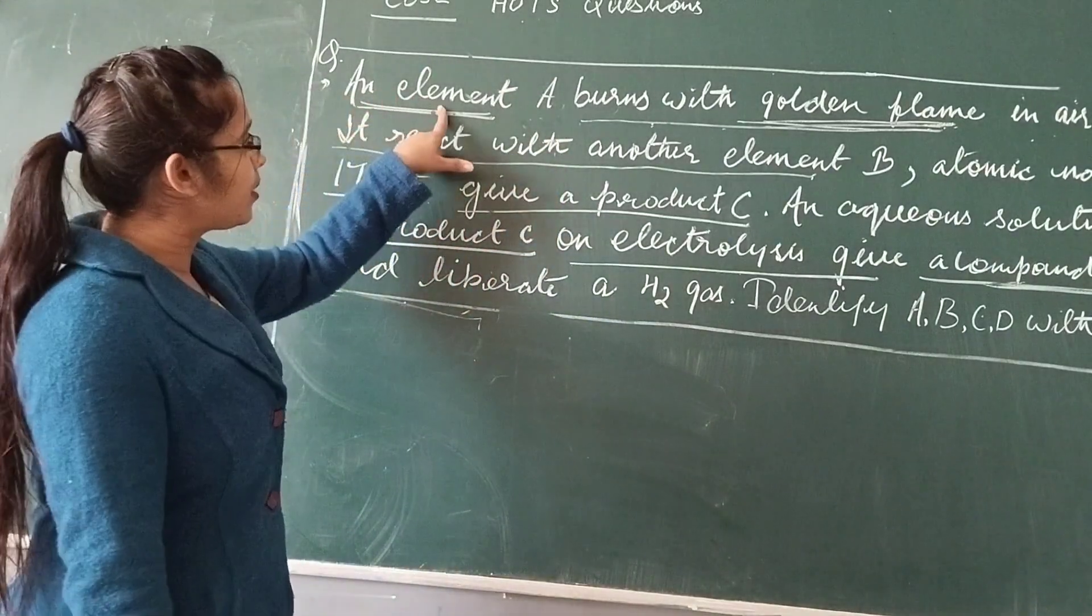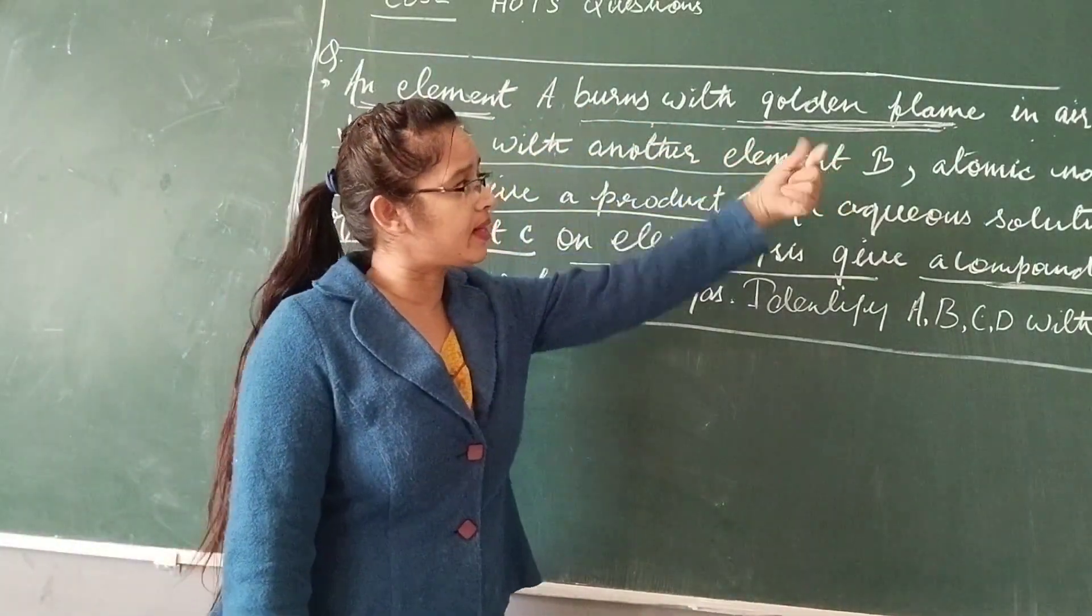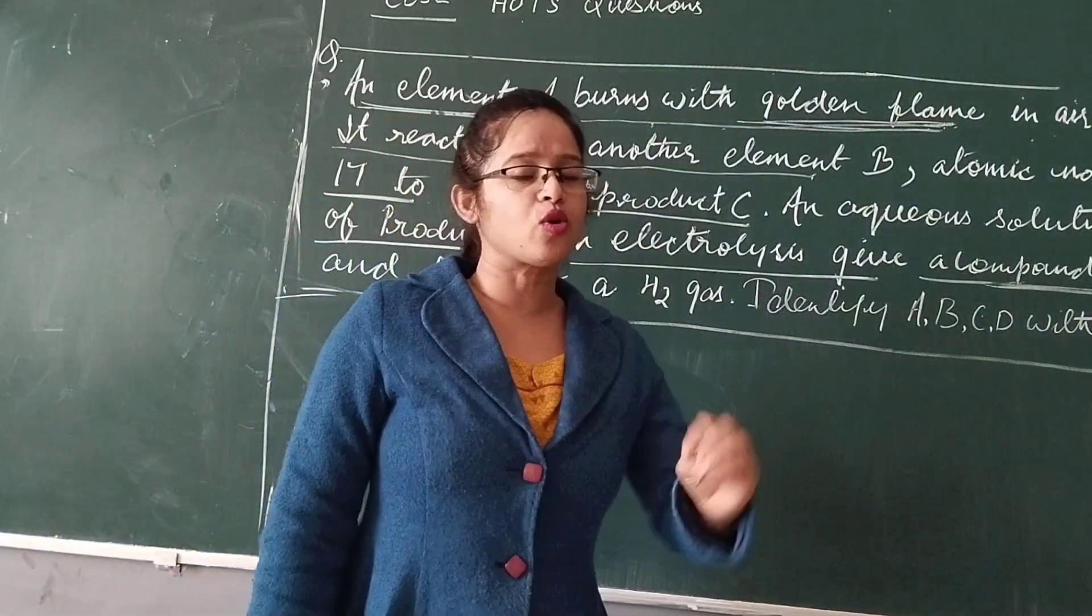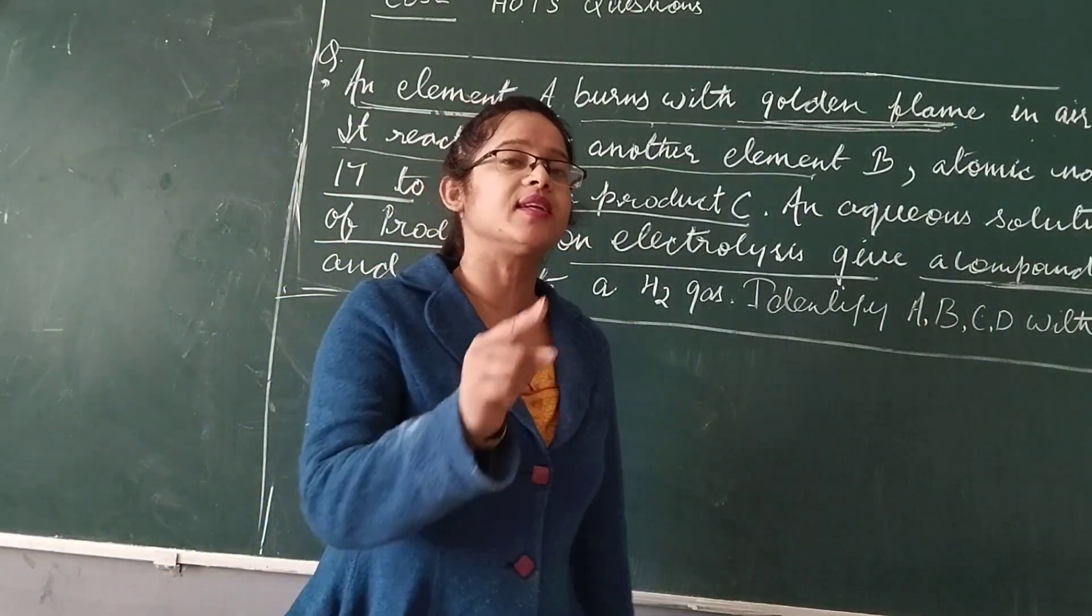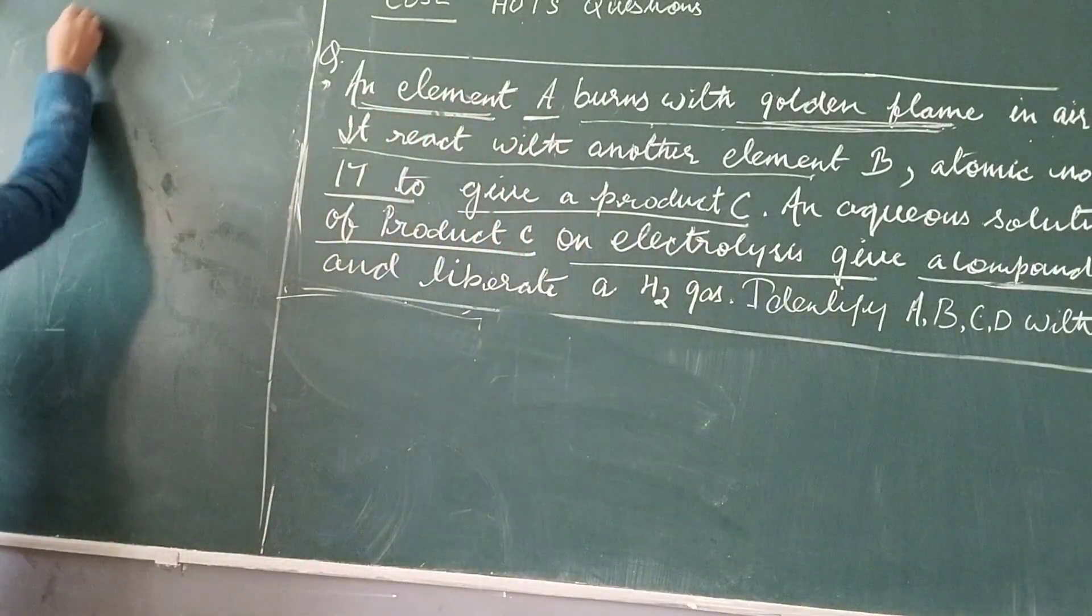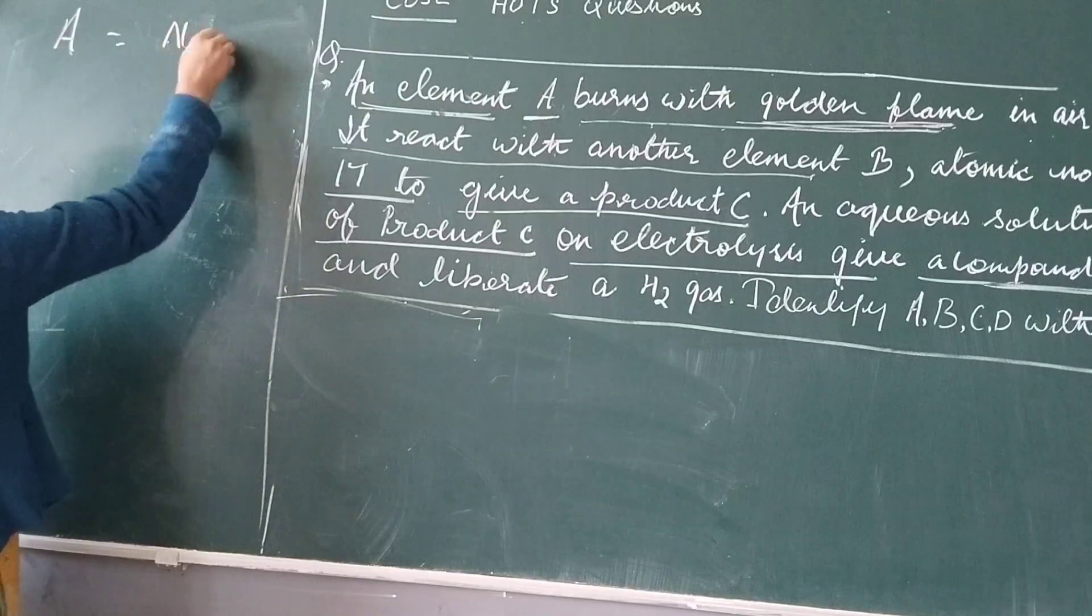The question is, what is our element A? What is the golden frame here? This element A, when we burn it, we give it a golden flame. What kind of element is it? Sodium. How does sodium burn? What kind of frame is it? Golden. So what does A say? A is sodium.